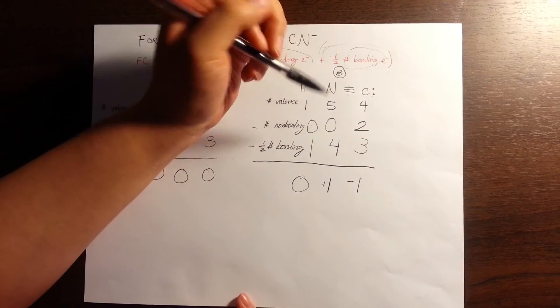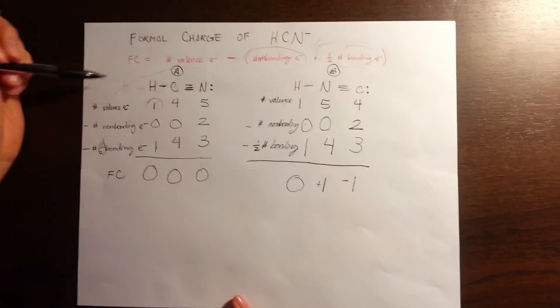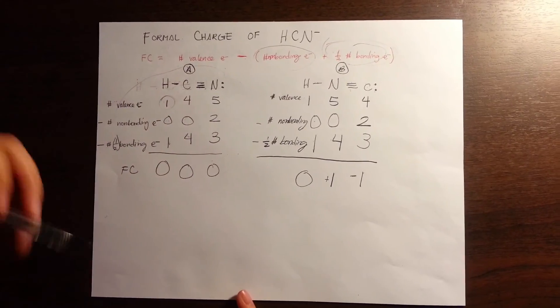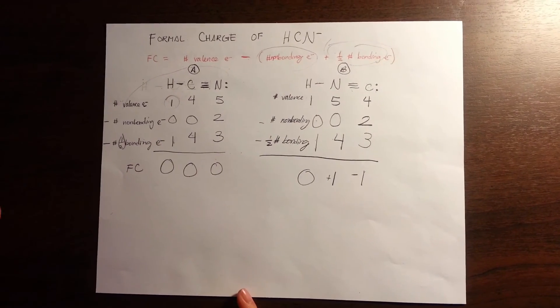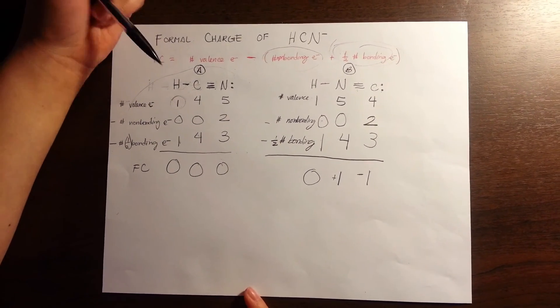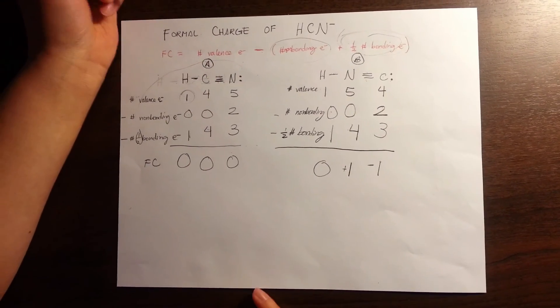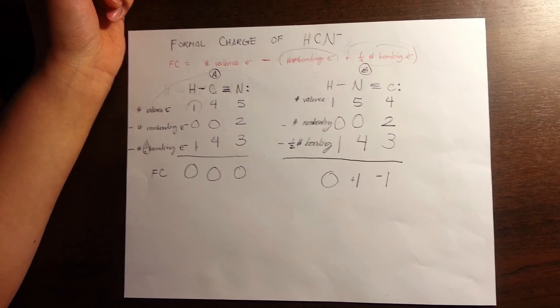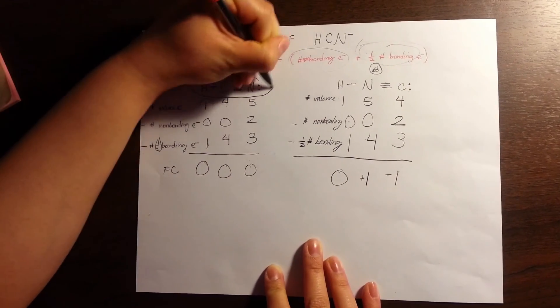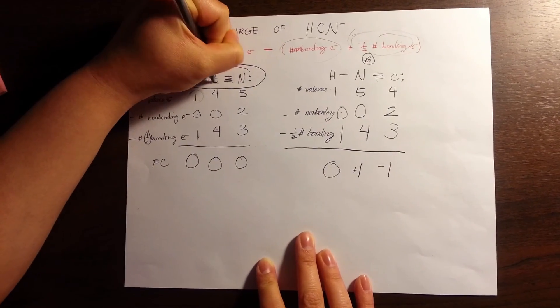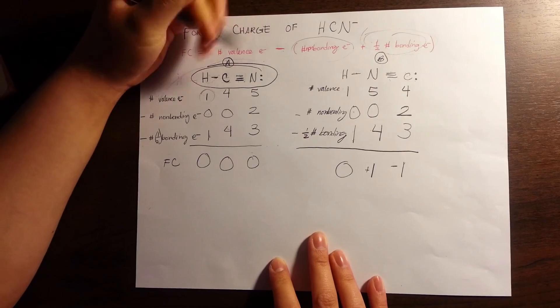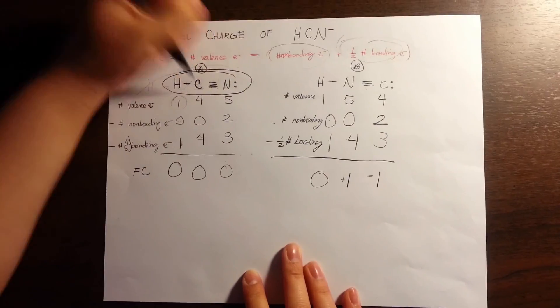If we're looking at our guidelines on how to draw Lewis structures, we know that we're supposed to put the least electronegative element in the center. And our formal charges go along with this, because this is the correct structure with the carbon, which is the least electronegative, in the center.